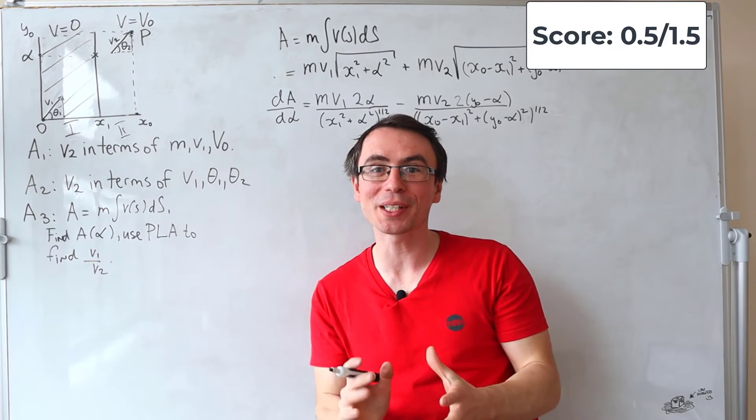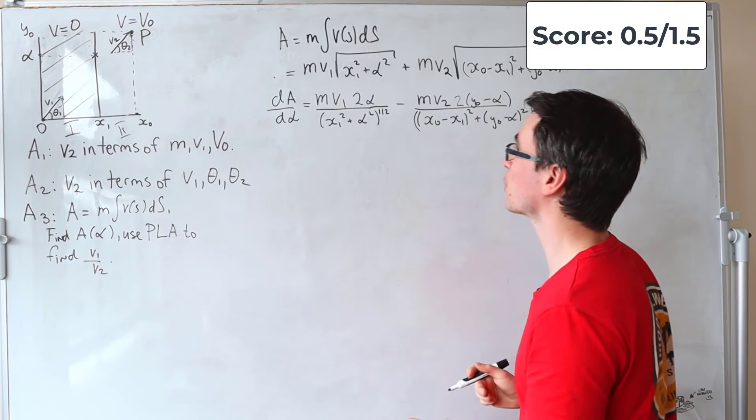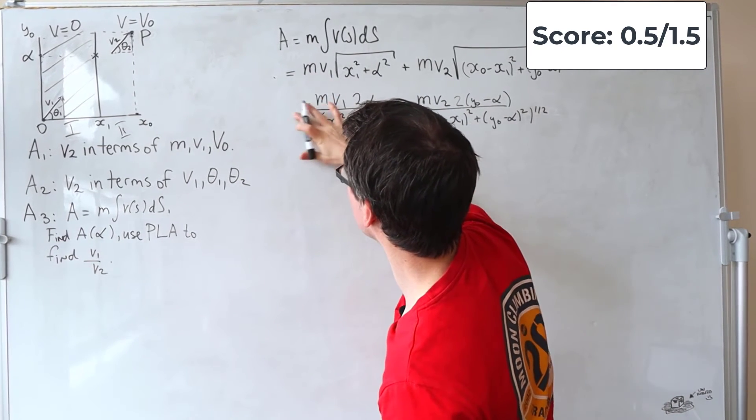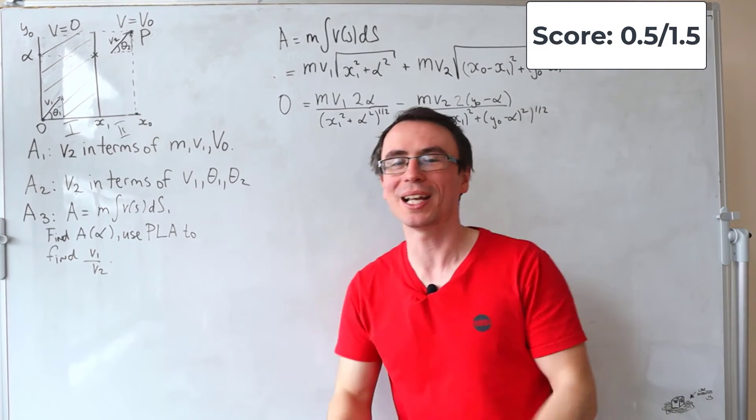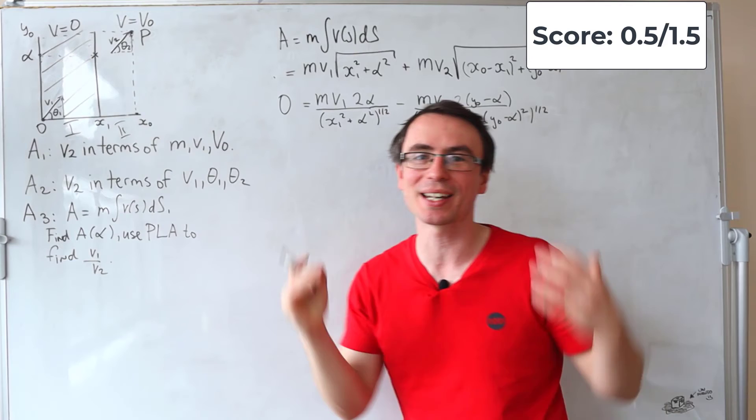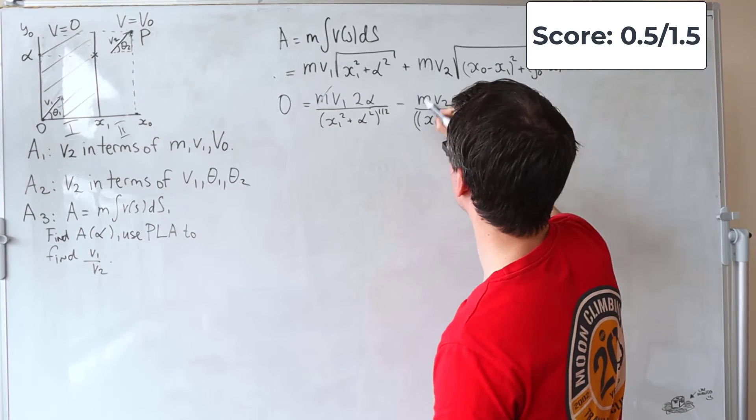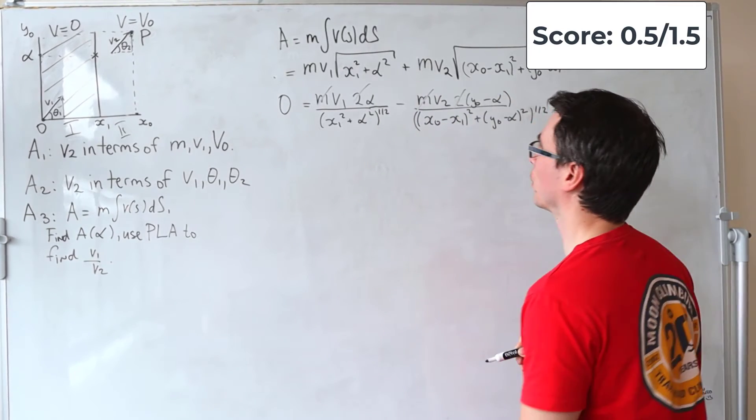Now, because we're using the principle of least action, and we want to find a minimum of this function, what I'm going to do is set this derivative, dA by d alpha, to be equal to 0. And this will allow me to do one of my favorite things, and that is to cancel terms out of an equation. So, this factor of m can go, this factor of 2 can also go.